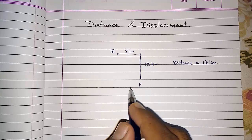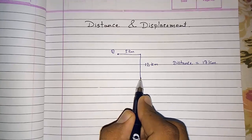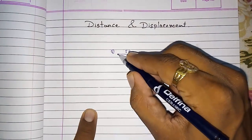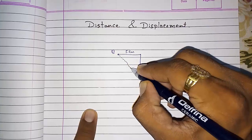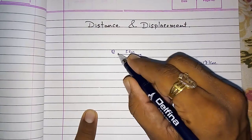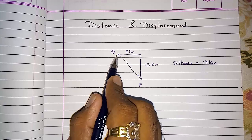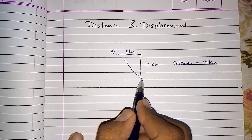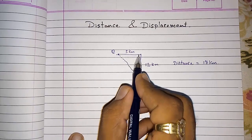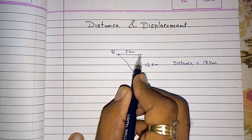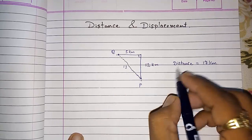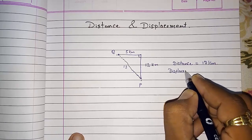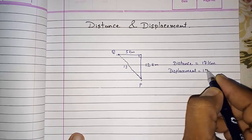Now what will be the displacement? The shortest distance from point P to Q — directly he can move like this. This is the shortest distance from point P to Q, and that will be the displacement. By Pythagoras theorem, the displacement will be 13 kilometers.